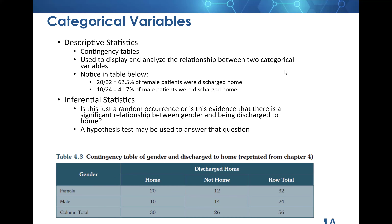One of the things we need to look at are descriptive statistics versus inferential. With inferential statistics, we're basically asking the question: is this just a random occurrence, or is this evidence that there's a big relationship between two variables? In this example, gender and being discharged to home. A hypothesis test is used to answer that question. Descriptive statistics are used to display and analyze the relationship.